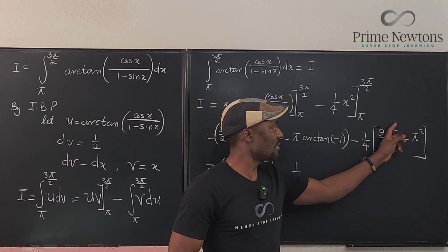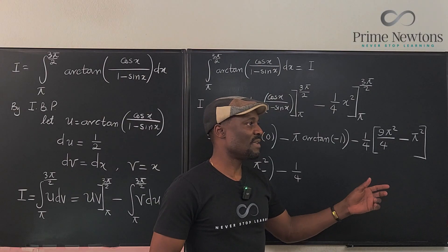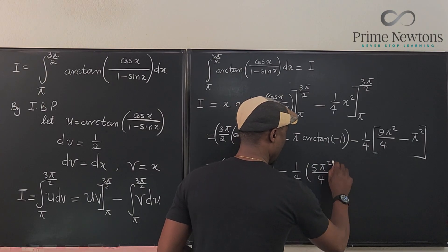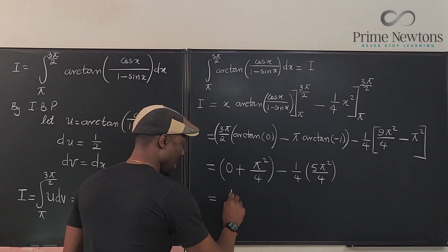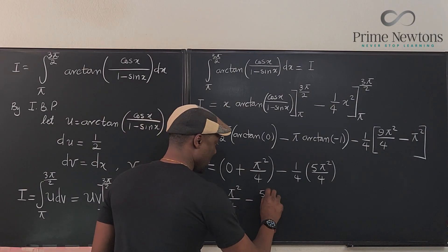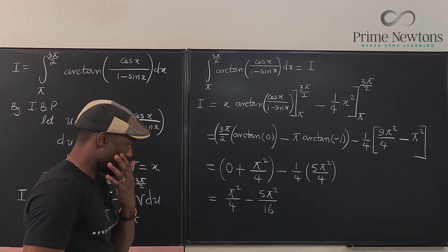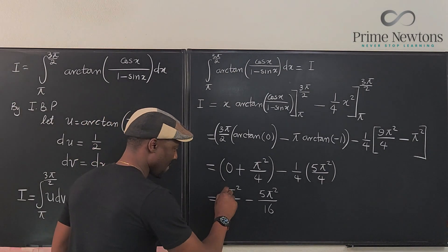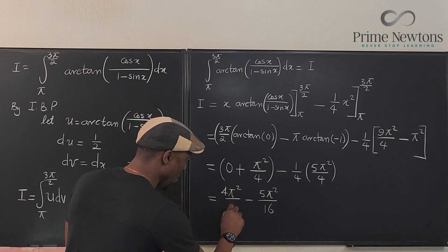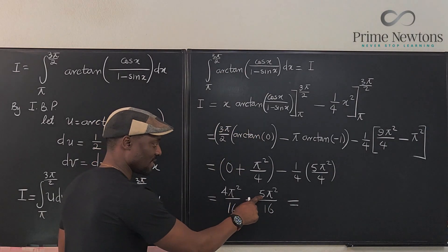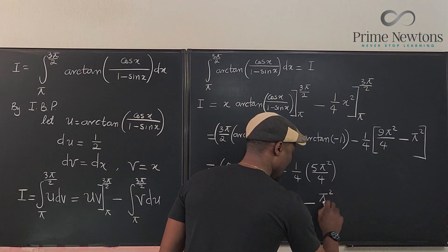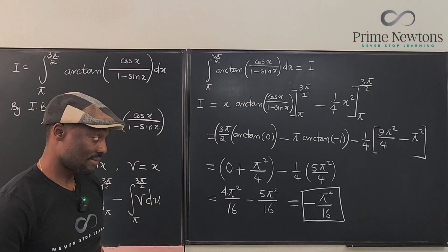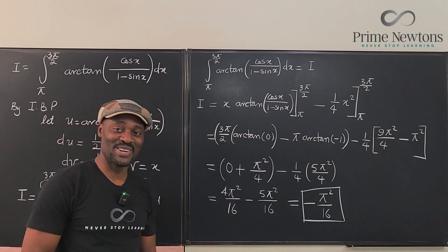For the second term: (1/4) times [(3 pi/2) squared minus pi squared] = (1/4) times [9 pi squared/4 minus pi squared] = (1/4) times [5 pi squared/4] = 5 pi squared over 16. So the final answer is pi squared over 4 minus 5 pi squared over 16. Giving a common denominator of 16: 4 pi squared over 16 minus 5 pi squared over 16 equals negative pi squared over 16. Never stop learning, never stop living.